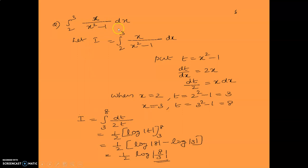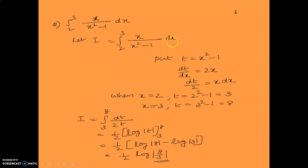Next question is integral 2 to 3 of x upon (x square minus 1) dx. Let i equal to integral 2 to 3 of x upon (x square minus 1) dx. Put t equal to x square minus 1, so dt upon dx equals 2x, giving dt upon 2 equals x dx. When x equals 2, t equals 3; when x equals 3, t equals 8. So i equals integral 3 to 8 of dt upon 2t. Taking 1/2 outside, integral of 1/t dt is log mod t. So the answer is 1 upon 2 log mod(8 upon 3).